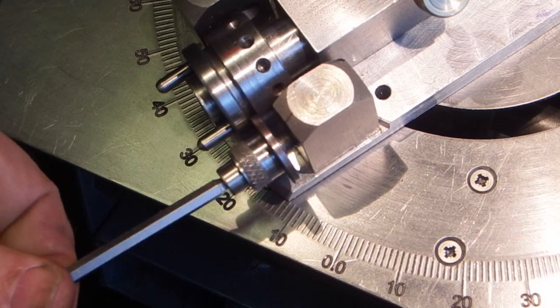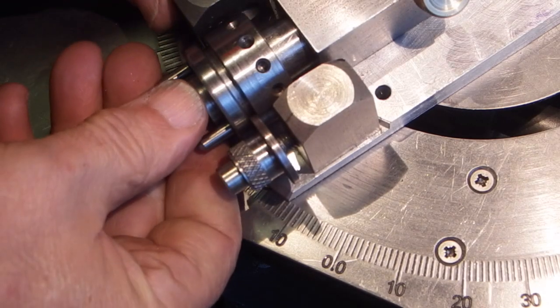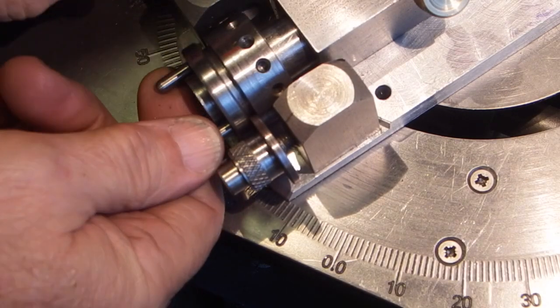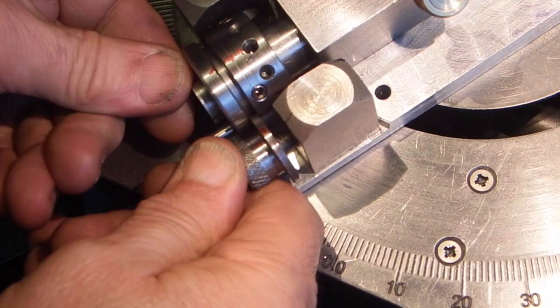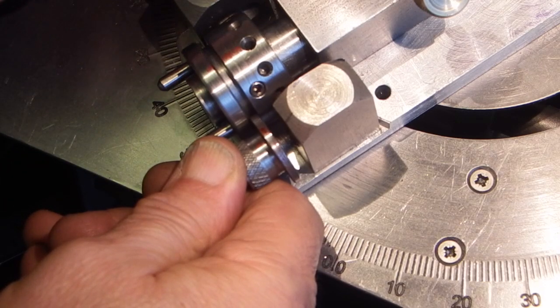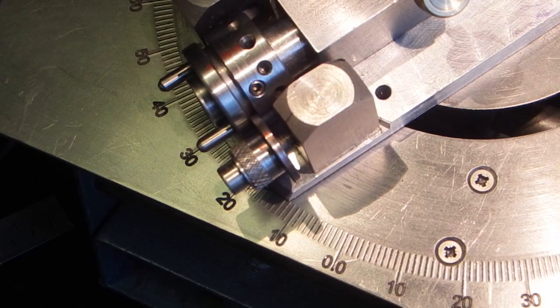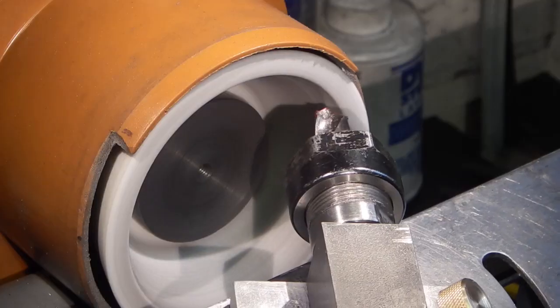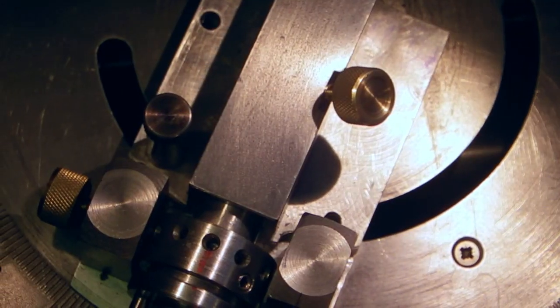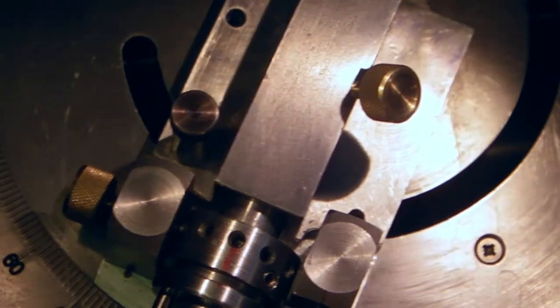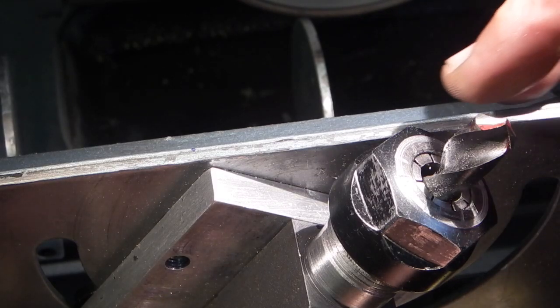One, two, that's stopped there. Slacken the indexing pin and rotate 180 degrees. Tighten the pin. So I've got two turns on the feed wheel to go back in.